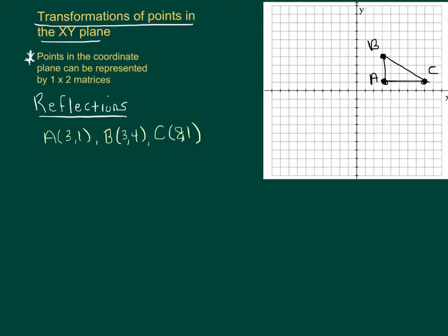I have a star next to a comment here which is that points in the coordinate plane can be represented by 1 by 2 matrices. We can write A the way we wrote it above, but we could also view A as a 1 by 2 matrix that just looks like this. The reason we're going to do that is because we're going to multiply that point, or the matrix that represents that point A, times another matrix and see what happens.